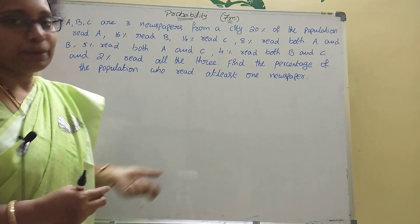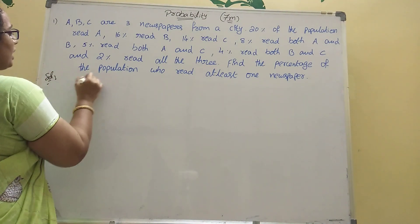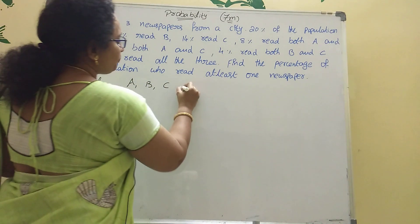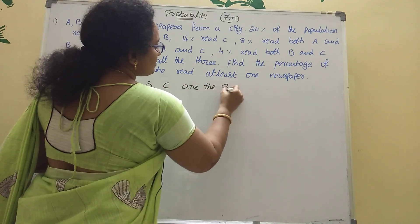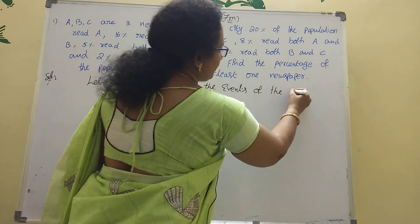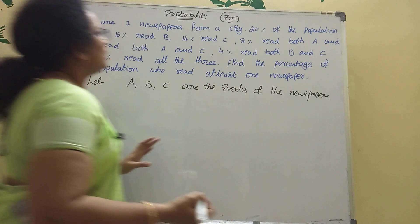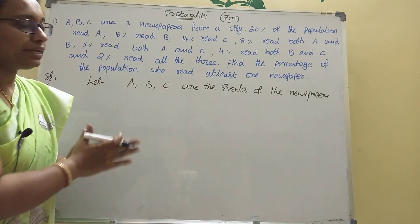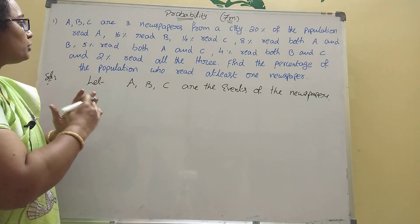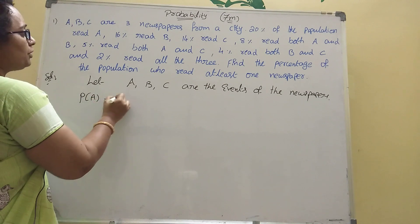Find the percentage of the population who read at least one newspaper. Let capital A, capital B, capital C be the events of reading the newspapers. P of A is 20%, P of B is 16%.